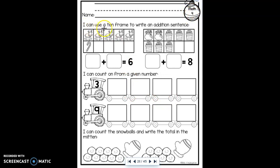So I can use a 10 frame to write an addition sentence. We've been practicing this last week and we're going to continue. So this time we're going to make the number six. We have two sets of items that equal six. So I have reindeer and candy canes. One, two, three, four, five. I have five reindeer. So my five needs to go in the first box and I have just one candy cane. So if I have five of one thing and one of another, five plus one equals six.